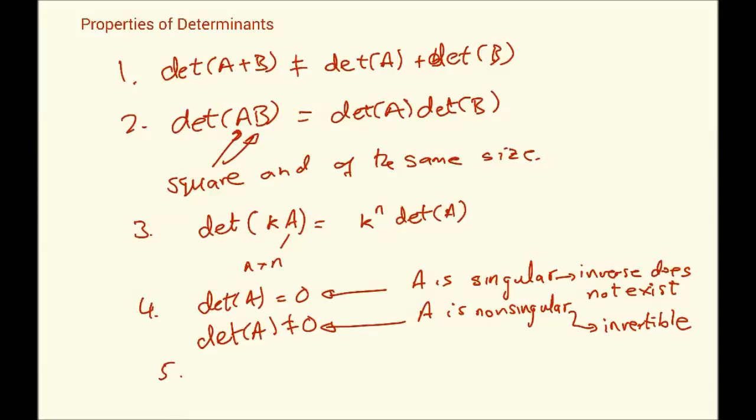Yet another property: if A is an invertible matrix, then the determinant of A inverse equals one over the determinant of A. Remember, A must be invertible. This is not generally true because if it's not invertible, you cannot calculate its inverse. That brings us to the end of the properties of determinants.